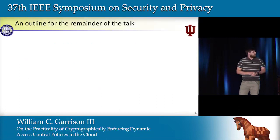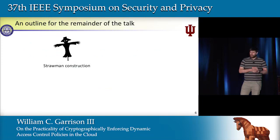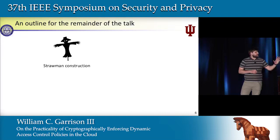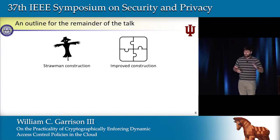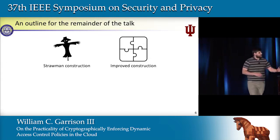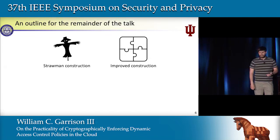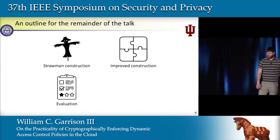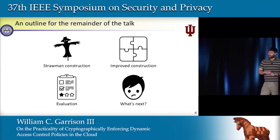To give a brief overview of the remainder of the talk, we'll start by looking at a construction for enforcing access controls using identity-based encryption, then discuss issues with that strawman construction to motivate a better one. At times we'll make security concessions for the best possible efficiency, trying to be as optimistic as we can about the costs of using advanced crypto to enforce access control. We'll then evaluate the costs of that construction and discuss future research directions.